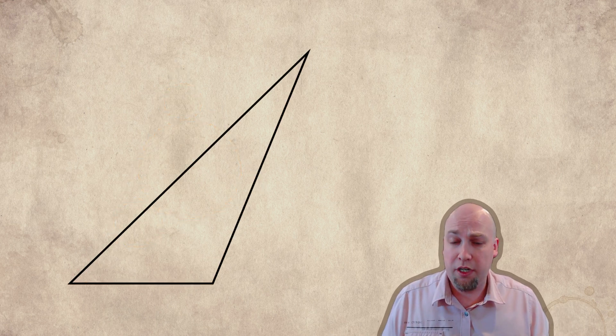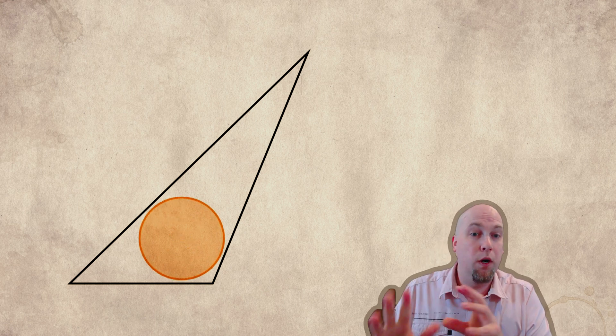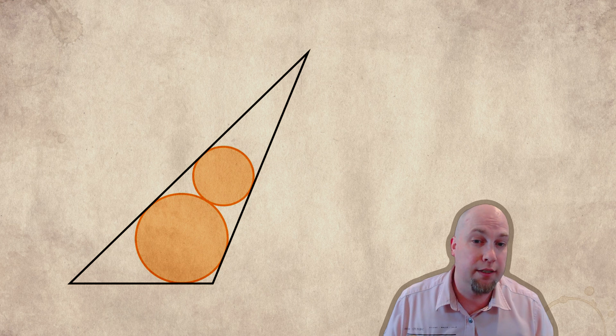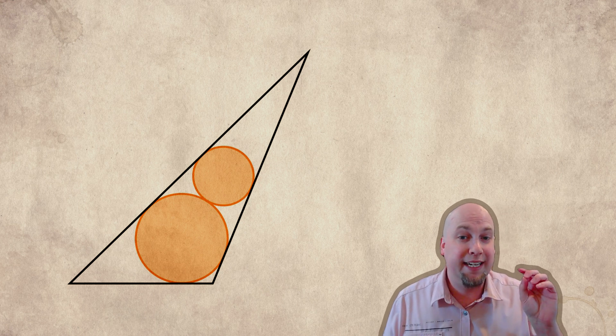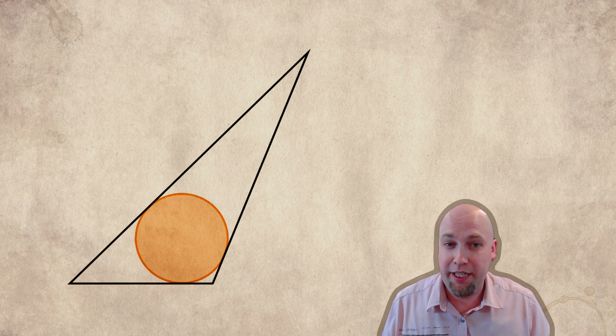And the really interesting thing is that yes, this always gives you the optimal configuration if you've got three circles. It's not too hard to show that it always gives you the optimal configuration. Also, if you only want to put one or two circles inside the triangle.